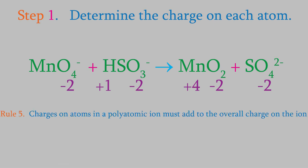Rule 5 tells us that the charges on atoms in a polyatomic ion must total to give the overall charge on the ion. For example, there are 4 oxygens in the permanganate ion. Each has a charge of minus 2, for a total of minus 8. The permanganate has an overall charge of minus 1, so the manganese must have a charge of plus 7. In the bisulfite ion, there are 3 oxygens, so these have a total charge of minus 6. There's also a hydrogen with a charge of plus 1. In order for the charges to add up to minus 1, the sulfur must have a charge of positive 4.